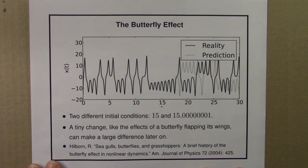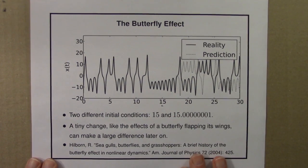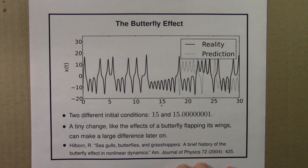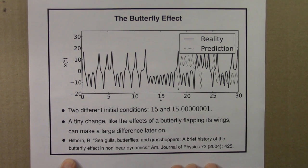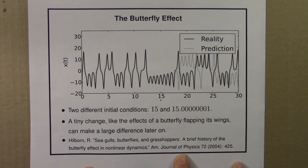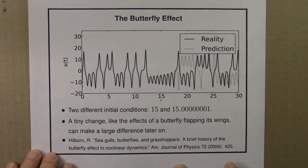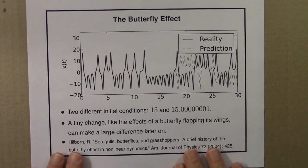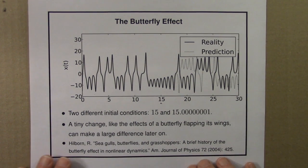Before moving on to talk about chaos, I should mention that there's a really interesting history to this term, the butterfly effect. I strongly recommend a short article by Hilborn in American Journal of Physics — there's a link to it on the Complexity Explorer page right underneath this video. It's a three-page non-technical piece if you're interested at all in the history of this term. It's a great read; I definitely recommend it.